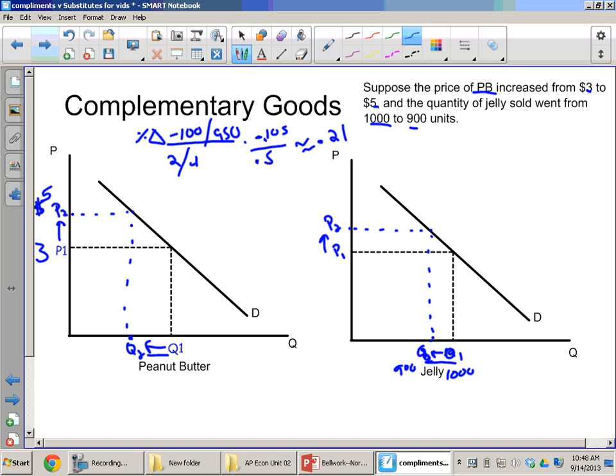And that answer because this number is negative. Make sure the decimal is there. And this number is going to be negative. So our answer is negative point two one approximately. So that's going to be our cross price elasticity in this case.